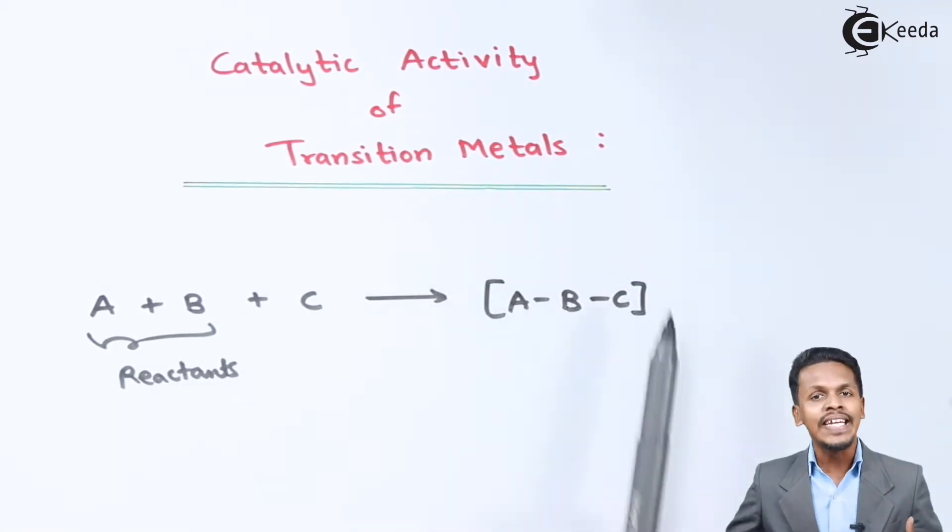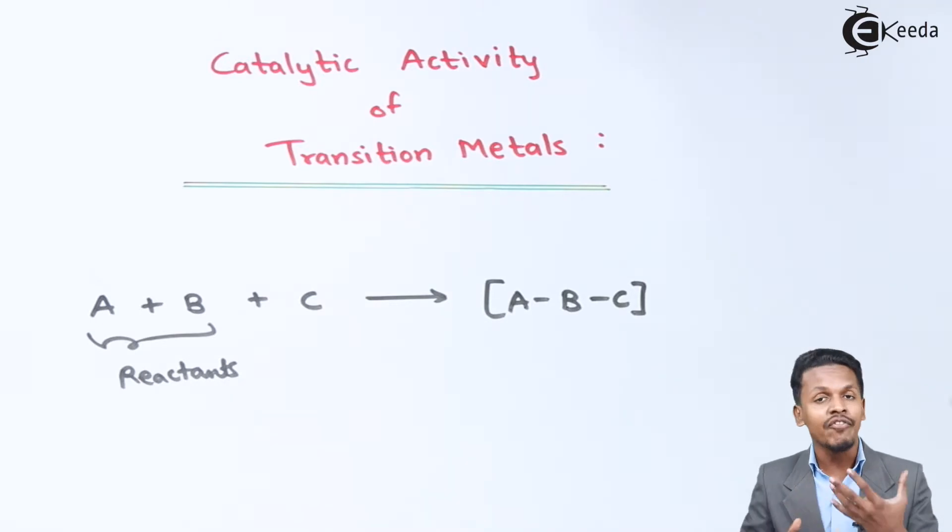The complex or intermediate that has been formed follows a different path. Based on this different path, the activation energy decreases. The catalyst has a major role to decrease the activation energy and thereby increase the rate of reaction, but it also depends on the path.